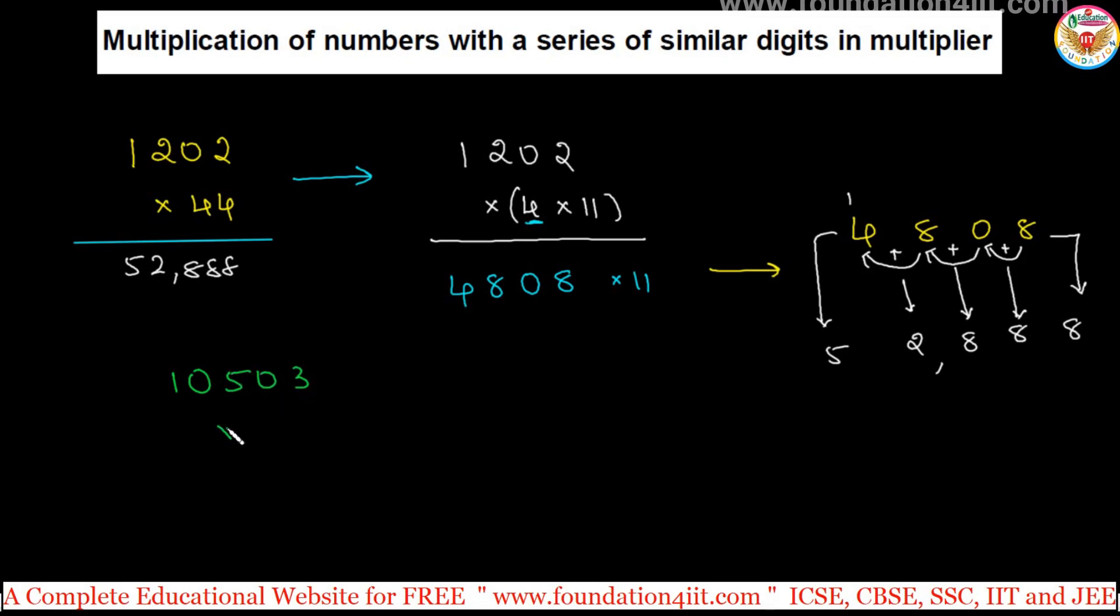Let us take 10,503 multiply with a bigger number like 888. Just in mind you can calculate: 888 is 8 times 111. So instead of taking directly with 888, take 111 and multiply this first, then the 8 part.